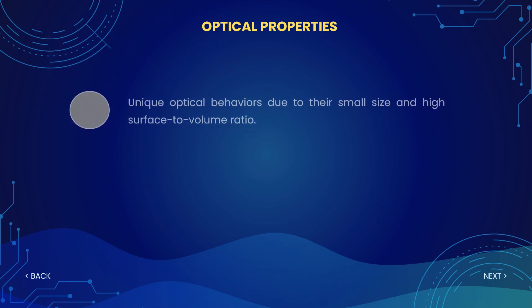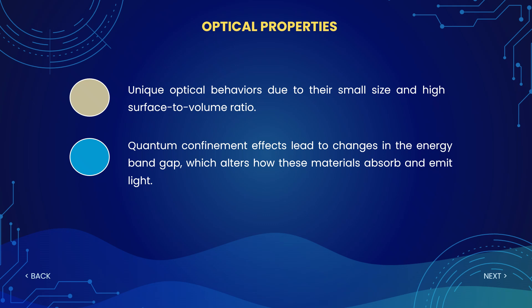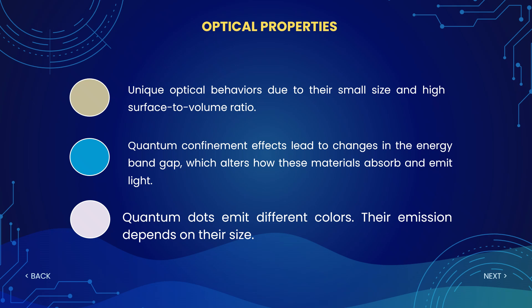Now let's see optical properties. Nanomaterials show unique optical behaviors due to their small size and high surface area to volume ratio. Quantum confinement leads to changes in the energy band gap, so the absorption or emission of light is different for nanomaterials. For example, bulk gold is golden or yellowish in appearance, but gold nanomaterials in a transparent liquid appear red or pinkish. Depending on particle size, the emission of color will be different.